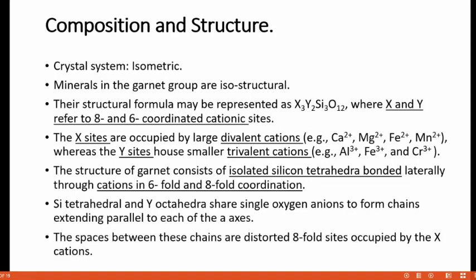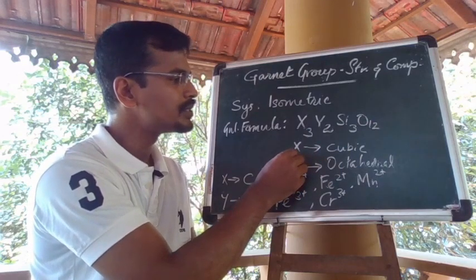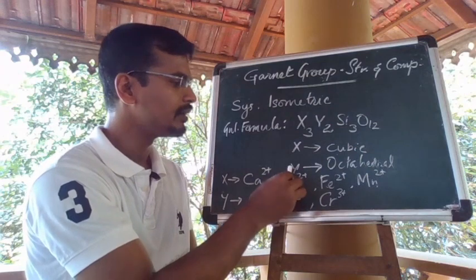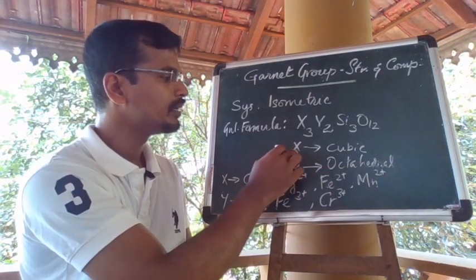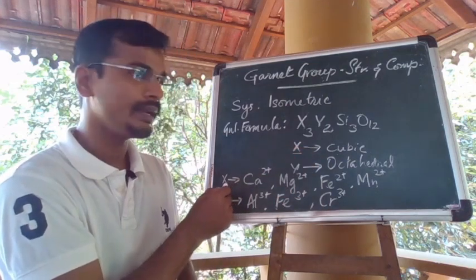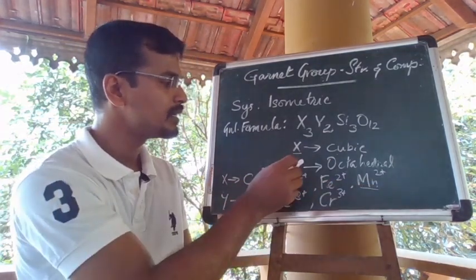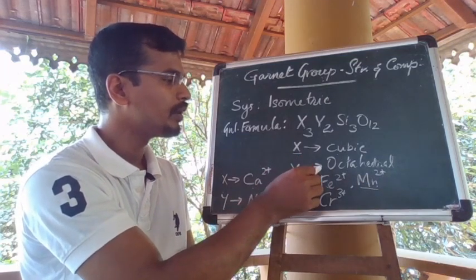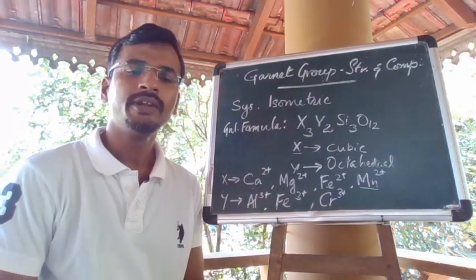Garnets belong to the isometric system and minerals in the garnet group are generally isostructural. Their structural formula may be represented by X3Y2Si3O12, in which the X-site is occupied by cations in the cubic site and Y-sites are occupied by cations having octahedral coordination. The X-sites are generally occupied by divalent cations like Ca2+, Mg2+, Fe2+ and Mn2+, whereas the octahedral Y-site is occupied by trivalent cations such as Al3+, Fe3+ and Cr3+.